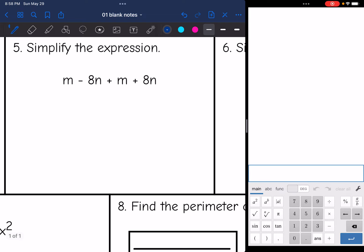Okay, let's simplify this one. The M is going to combine with the other M and M plus M is 2M. And then the negative 8N will combine with the positive 8N. And that is actually a zero pair. So negative 8N plus 8N zeros out. So the final simplified expression is just 2M.